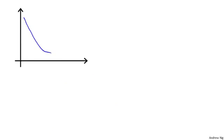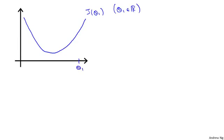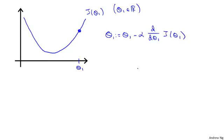Let's say here's my function j of theta one, and theta one is a real number. Let's say I've initialized gradient descent with theta one at this location—imagine that we start off at that point on my function. What gradient descent will do is update theta one as theta one minus alpha times d/d(theta one) of j of theta one.